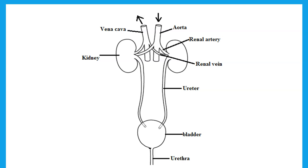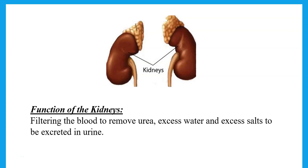Now, what has been removed from the blood, which is excess water, excess salts, and urea, this is what we call urine. The urine goes down through the ureter to be stored in the urinary bladder, and then expelled out of the body through the urethra. So, the function of the kidneys is filtering the blood to remove urea, excess water, and excess salts, and these are excreted out of the body in the form of urine.